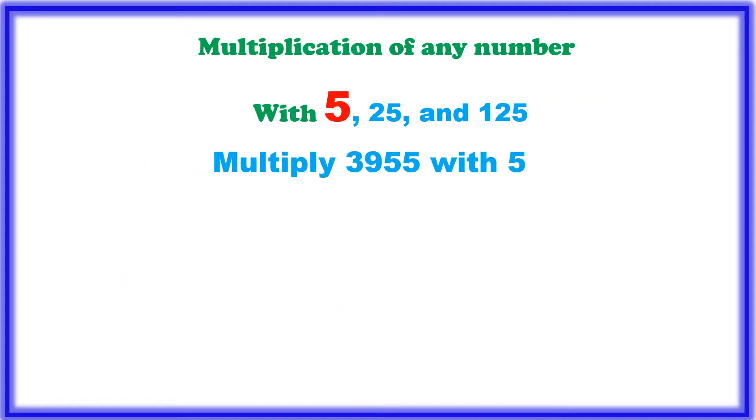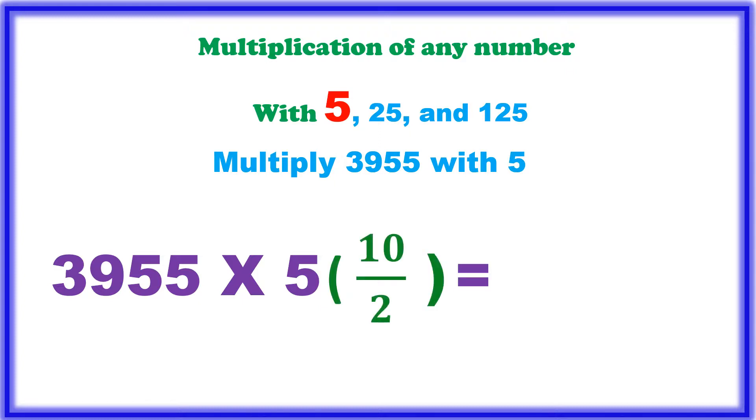Let me try one more example. Multiply 3955 with 5. 3955 is an odd number. It should be multiplied with 5. So as usual, 10 by 2 and then 3 should be divided by 2 one time and 1 is left. 19, 2 nines are 18.